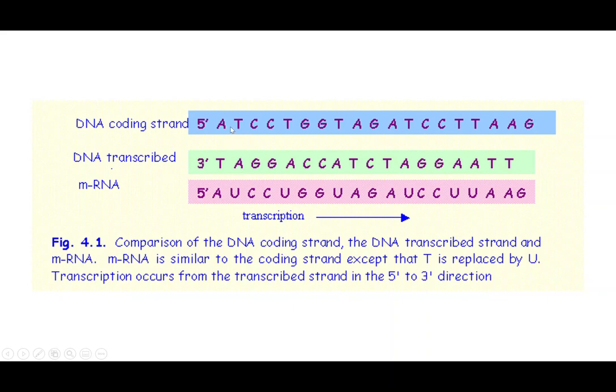And this is just how we go through the process of doing that. So A goes with T, and then T goes with A. And we know in RNA we don't have T, so the T is going to be replaced by U, which is uracil.